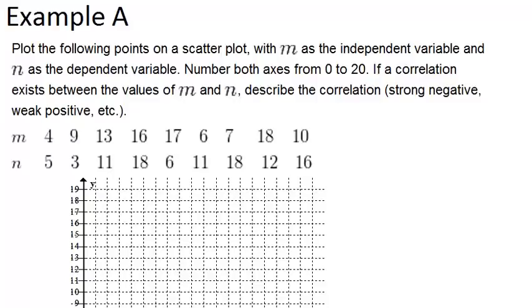Plot the following points on a scatter plot, with m as the independent variable and n as the dependent variable. Number both axes from 0 to 20. If a correlation exists between the values of m and n, describe the correlation.